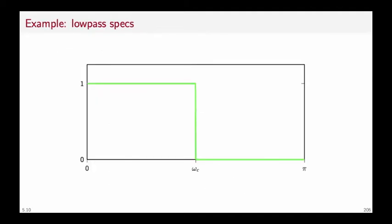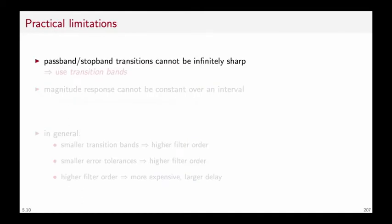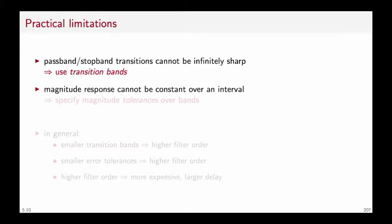For example, if we want to design a low pass filter, the specifications could include a cut-off frequency, a desired value for the pass band, and a desired value for the stop band. These specifications seem to indicate an ideal characteristic that we know we cannot attain in practice. Therefore we try to fulfill these requirements by taking into account what is achievable with a realizable filter. In particular, we know that the pass band and stop band transitions cannot be infinitely sharp, so we will use transition bands to allow for a gradual decay of the frequency response from pass band to stop band. Also, the magnitude response cannot be constant over an interval, so we must specify some tolerances within which we allow the frequency response to move.